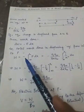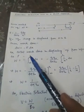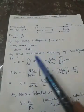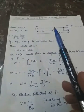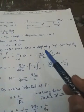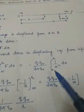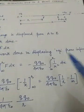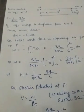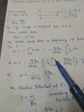The total work done in displacing plus Q naught from infinity to point P is W = −∫F dx from infinity to R, where infinity represents the distance from O to infinity and R represents the distance of point P from O. Substituting the value of F, we get W = −(Q Q naught / 4πε₀) × ∫(1/x²) dx from infinity to R. Evaluating the integral gives W = −(Q Q naught / 4πε₀) × [−1/x] with limits from infinity to R.